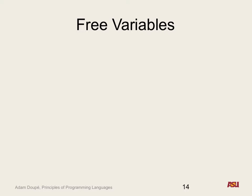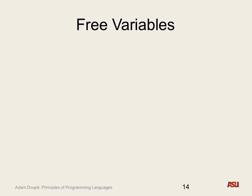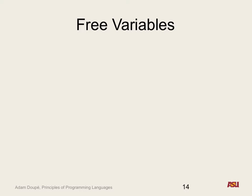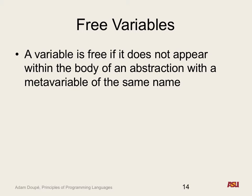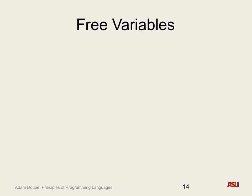Now we need to talk about different types — specifically bound and free variables. We need two definitions: when we see a variable, what kind is it? It depends on the scope. Given a lambda expression, a variable is free if it's essentially a global variable. If it's not free, we say it's bound — meaning it maps to an argument of a function.